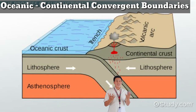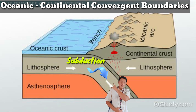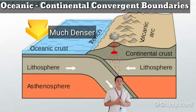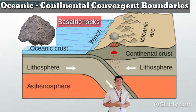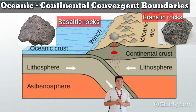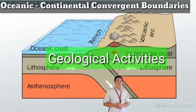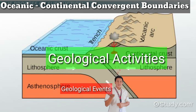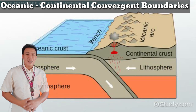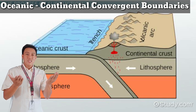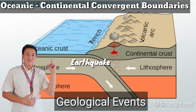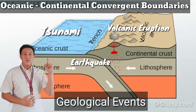In convergent plates, the lithosphere of the oceanic crust will be the one to subduct, because oceanic crust is much denser than continental crust. Basaltic rocks found in ocean plates are much denser and heavier than granitic rocks found in continental plates. This results in geological activities, which separate into two: geological events and geological features. If oceanic plates converge with continental plates, the geological events are earthquake, potential tsunami, and potential volcanic eruption.